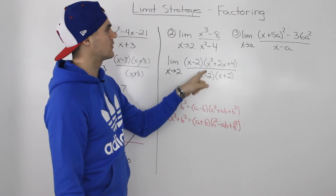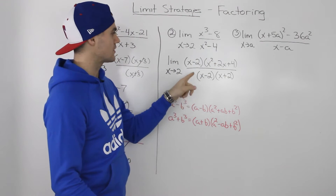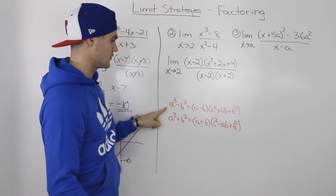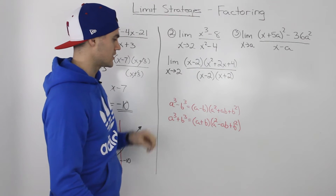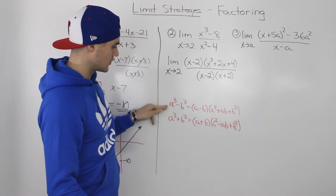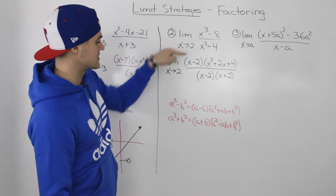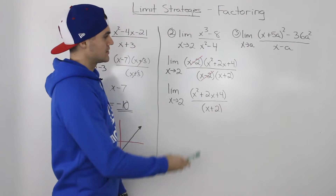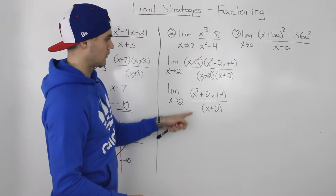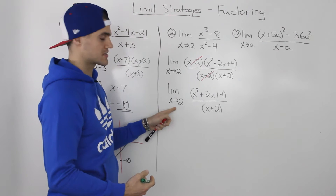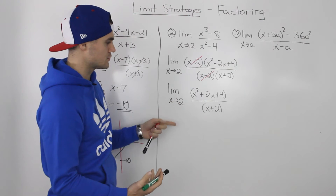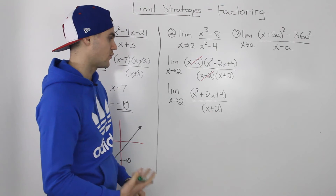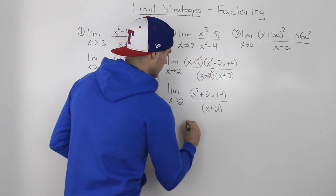We can factor both the numerator and denominator. The numerator is a difference of cubes, which factors into (x minus 2)(x squared plus 2x plus 4) using the difference of cubes formula. The denominator is a difference of squares: (x minus 2)(x plus 2). The x minus 2 factors cancel, leaving us with (x squared plus 2x plus 4) over (x plus 2). Substituting x equals 2 gives 12 over 4, which equals 3.